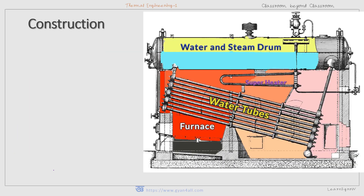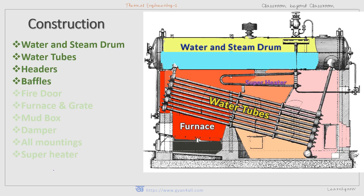Now we will discuss the main parts of the Babcock and Wilcox boiler. This boiler is used to produce high pressure steam in ships and for the production of electricity. All the parts except the furnace are hung by means of a metallic strap or belt supported on pillars.